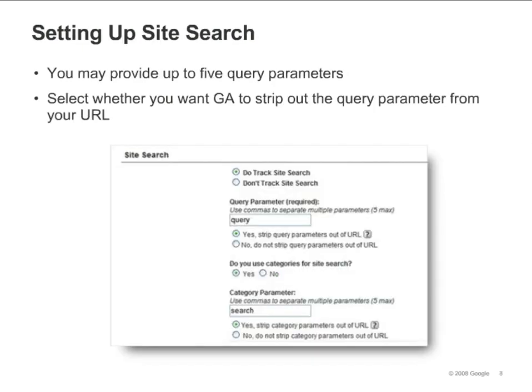If you have a particularly large site, some sections of your site may use different query parameters. You may provide up to five parameters, separating each parameter by a comma.